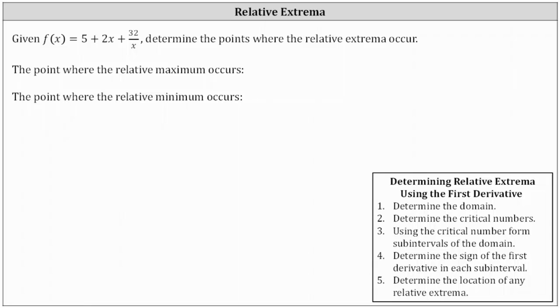Given f of x equals 5 plus 2x plus 32 divided by x, we are asked to determine the points where the relative extrema occur.